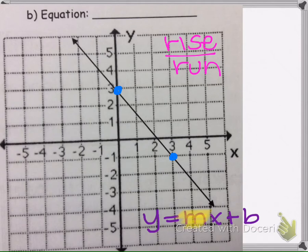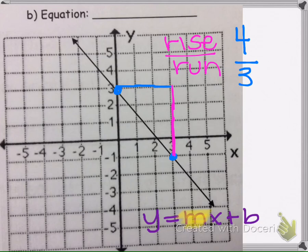I'm going to rise 1 box, 2 boxes, 3 boxes, 4 — so the rise is 4. And I run 1 box, 2 boxes, 3 boxes. To tell if the slope is negative or positive, we look at the graph from the left side to the right side. From left to right, it's going down, so the slope is negative. That gives us negative 4 thirds.